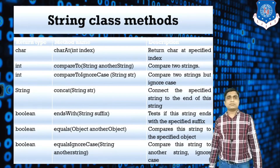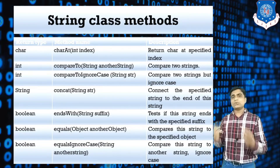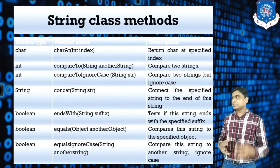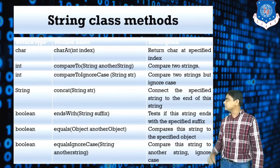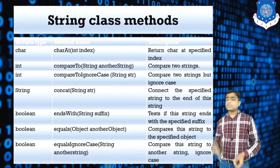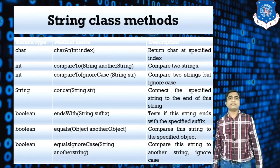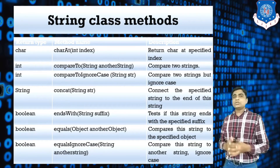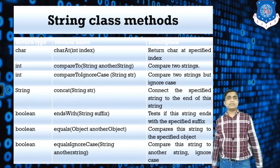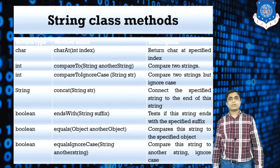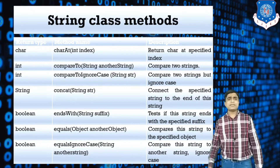The first method is charAt. If you pass an integer argument, this method will return a character. For example, if we have a string s1 and you write s1.charAt(0), this will return the character at index zero. If you pass five, it will return the fifth character in your string. So charAt returns the character at a specific index.